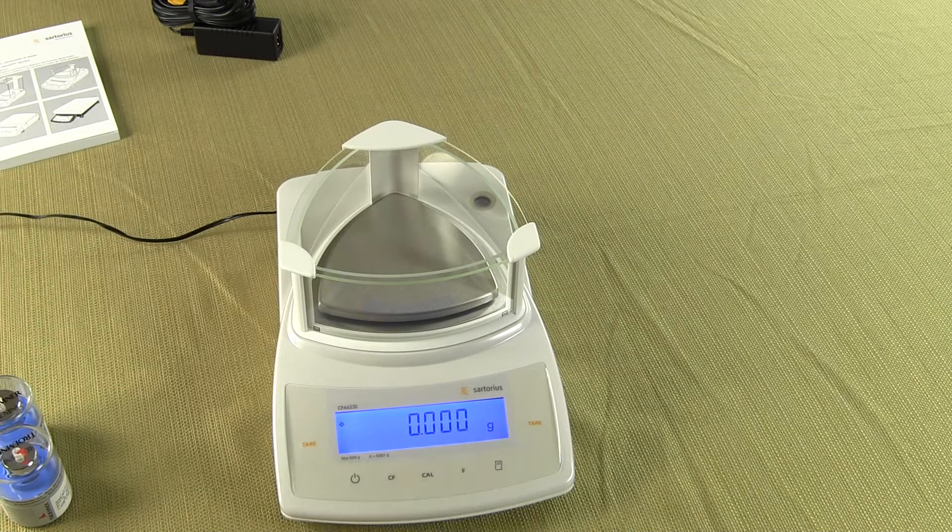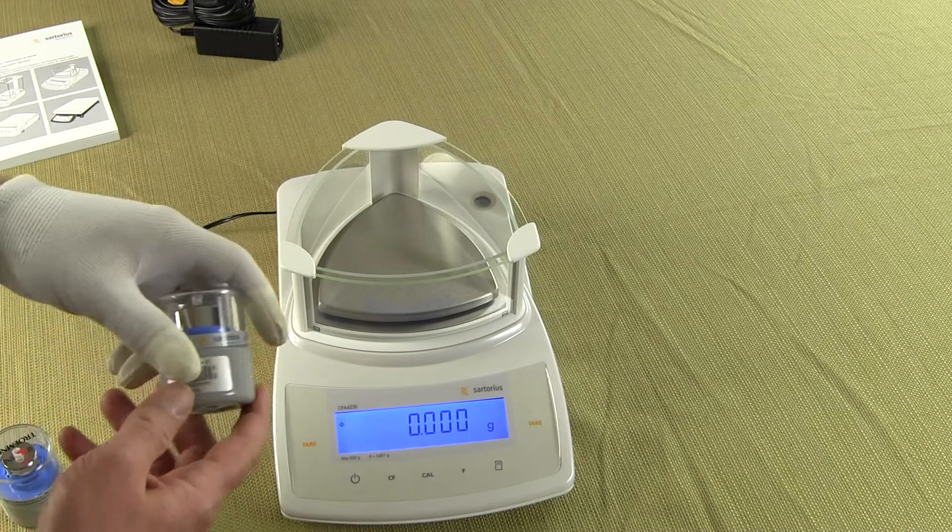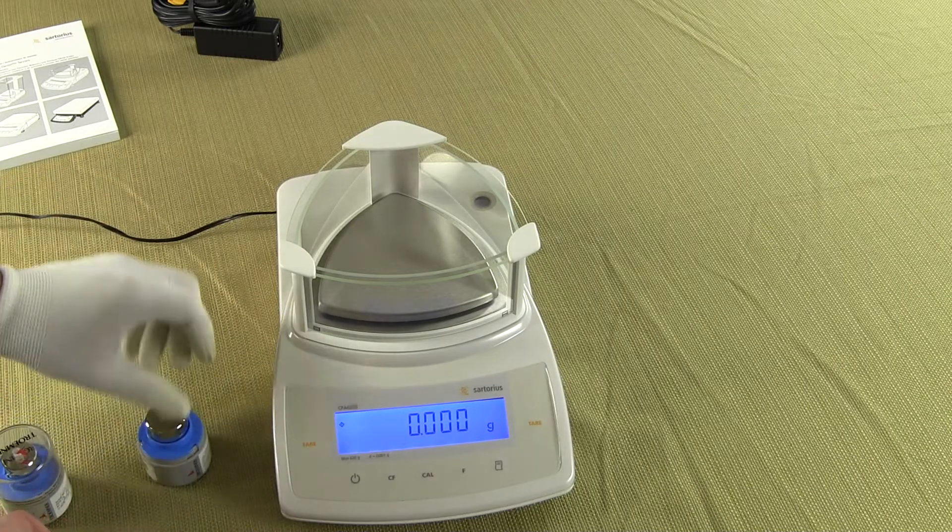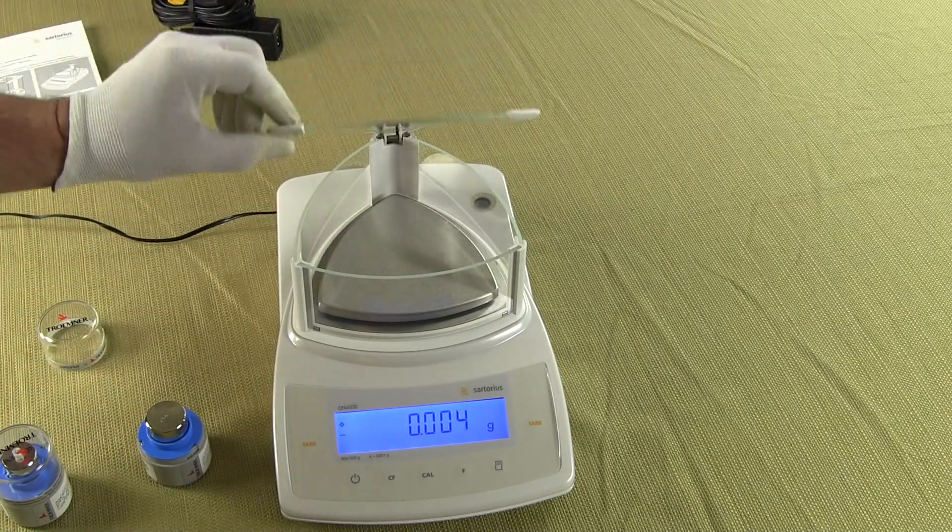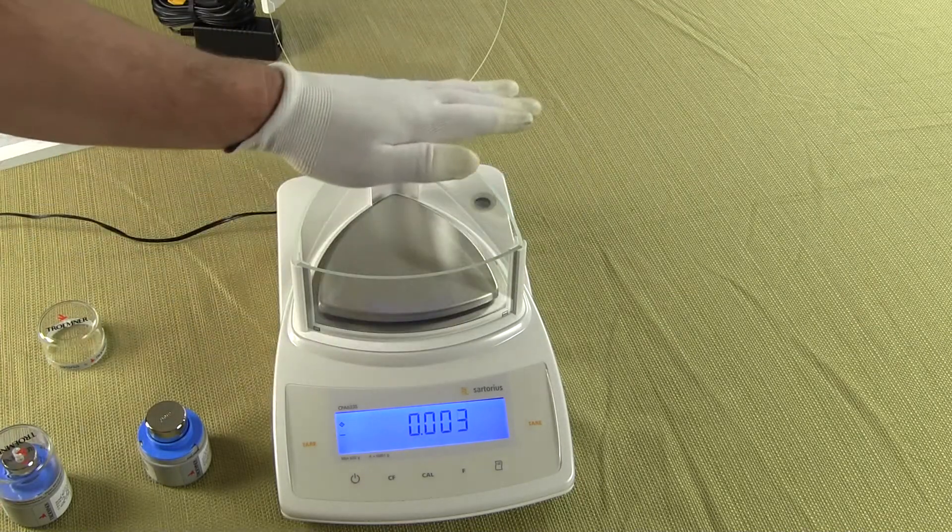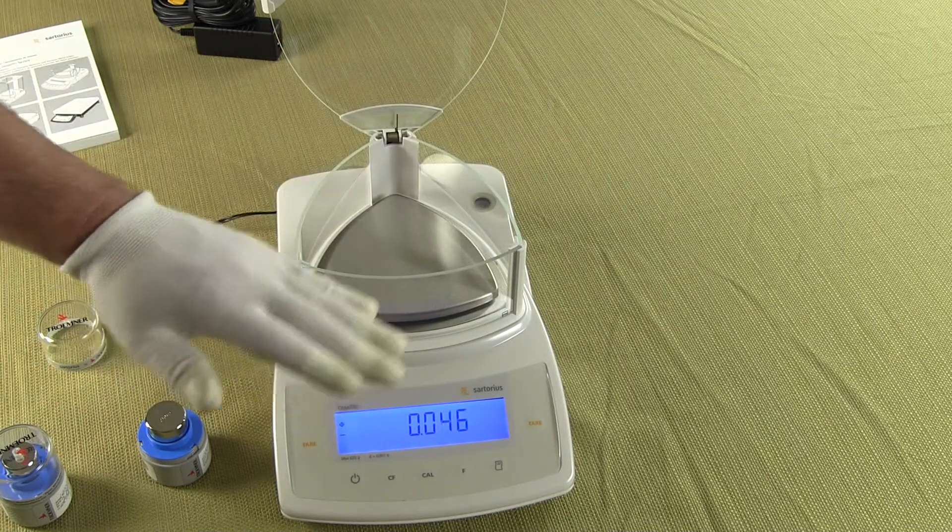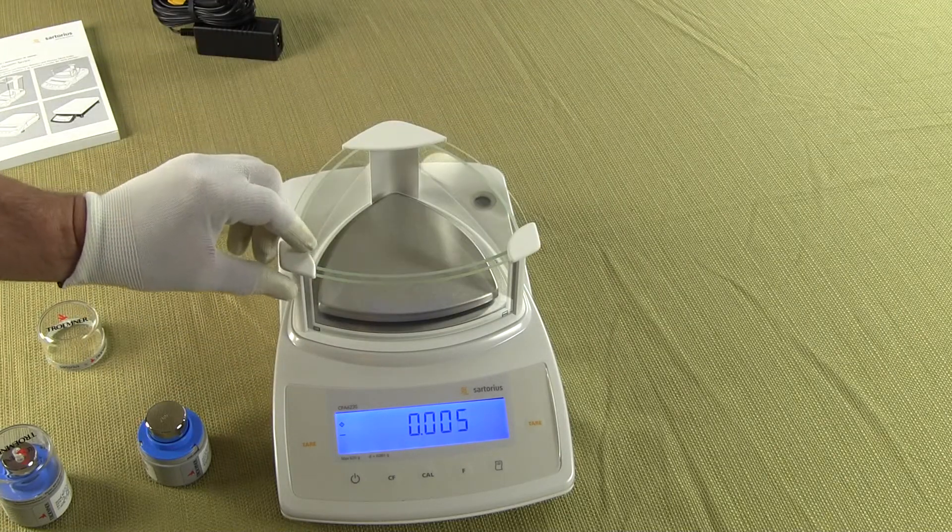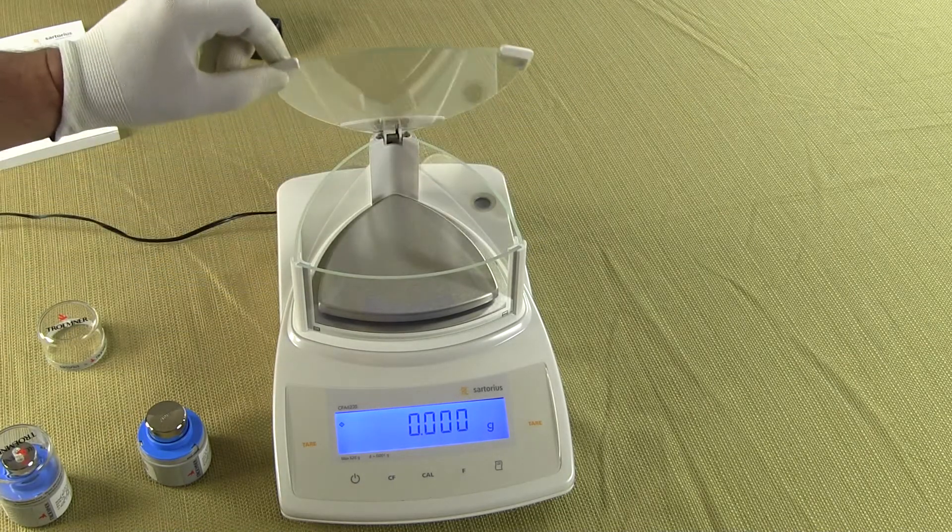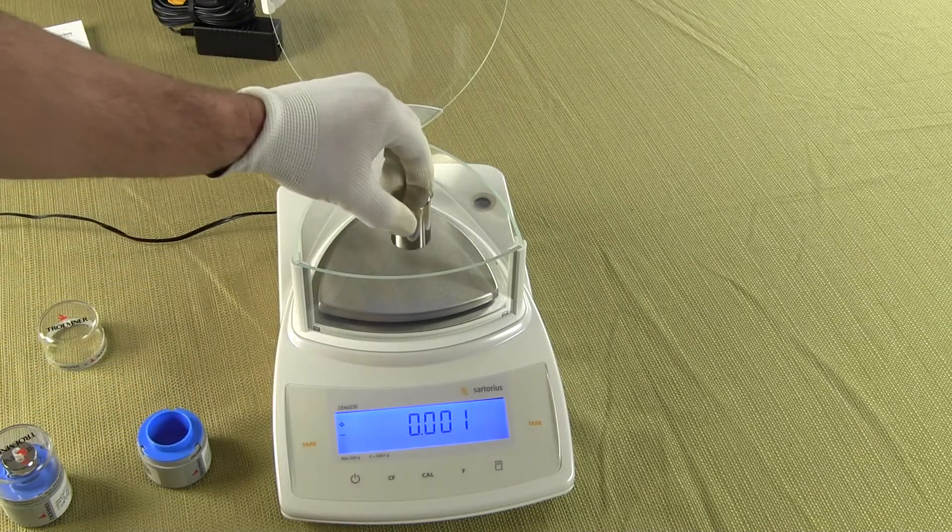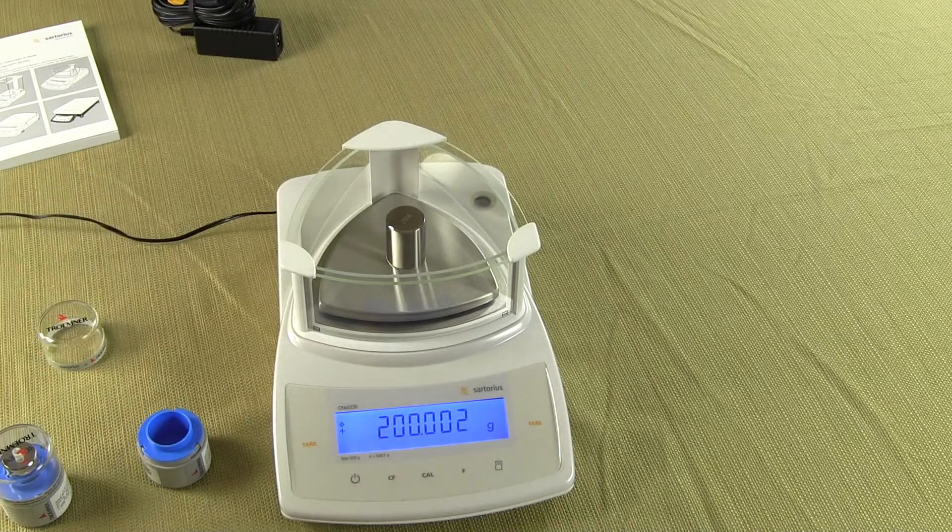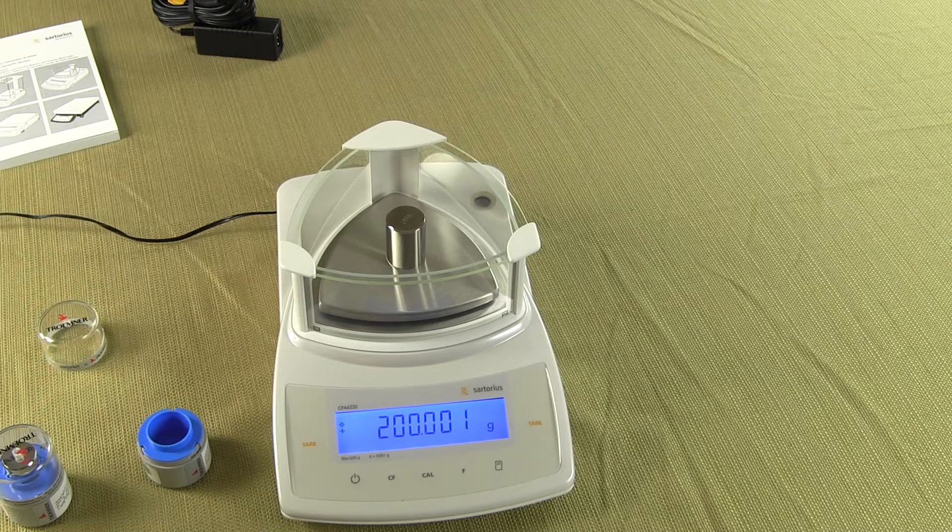So I have here my glove and we have here this is a class one 200 gram weight and simply open the draft shield. So this draft shield has a nice hinge, hinge cover and you can see this balance, if I move my hands over it the numbers go all over the place. This is why you really need a draft shield when you're dealing with a milligram balance. So the balance returns to zero. We open this guy up, put on a 200 gram weight and you can see the balance.